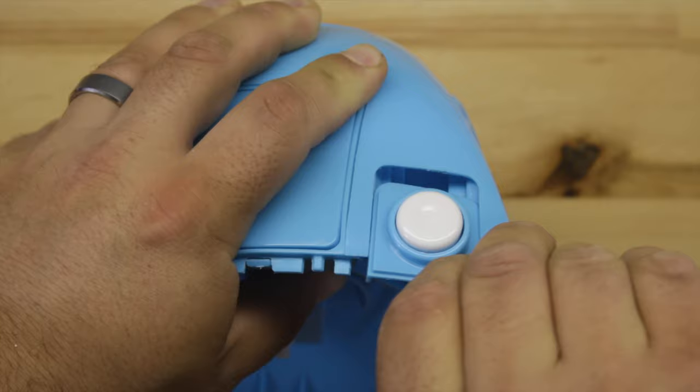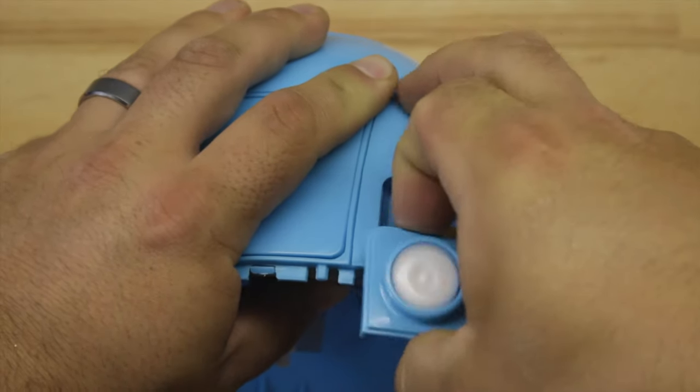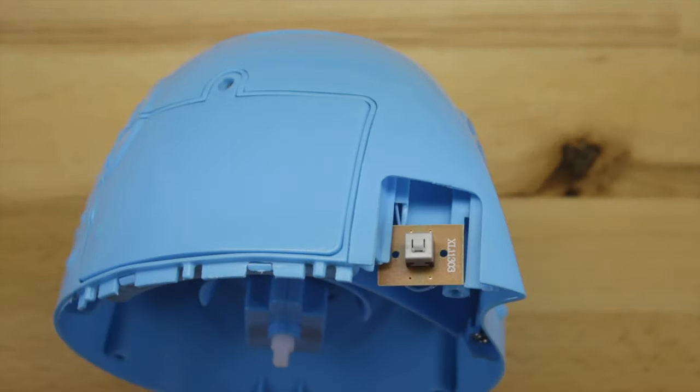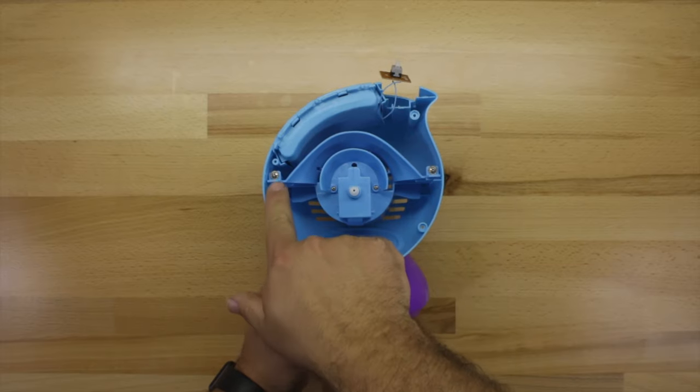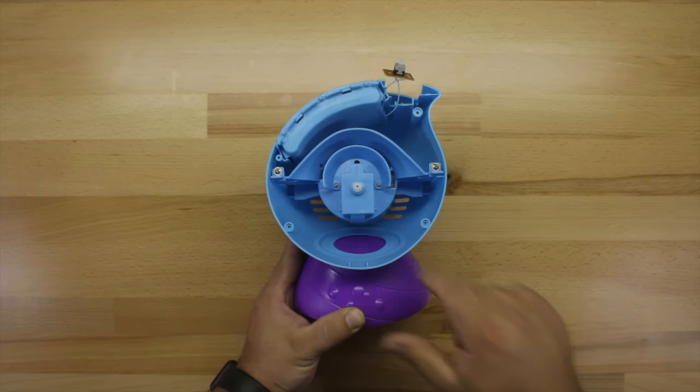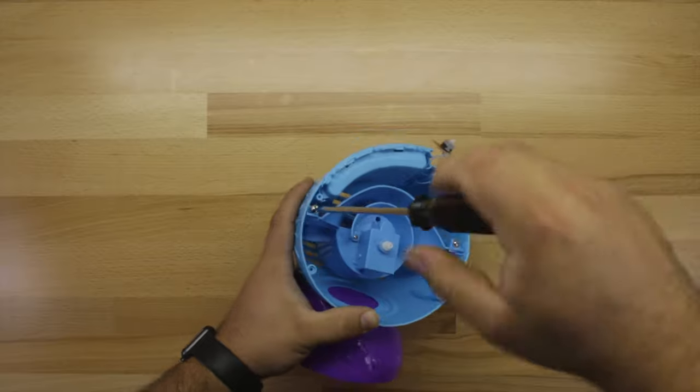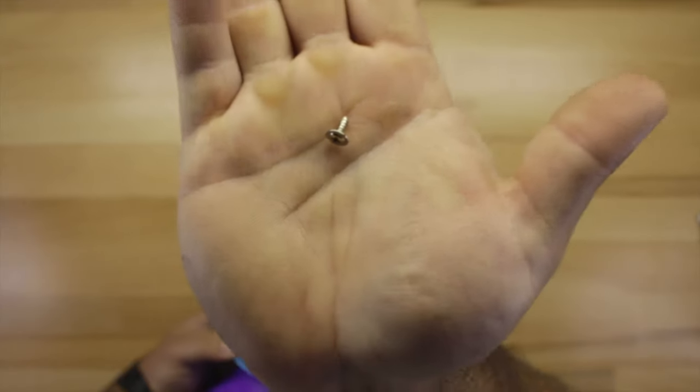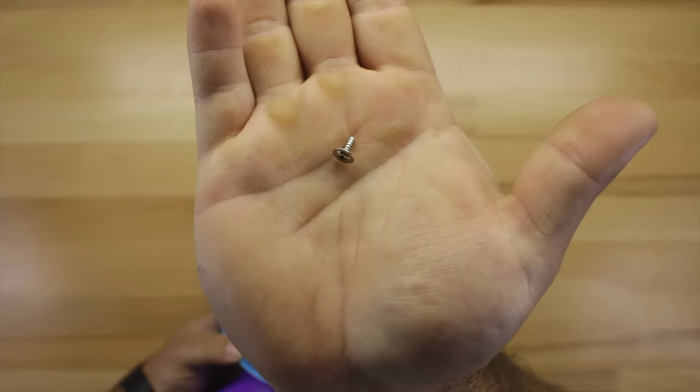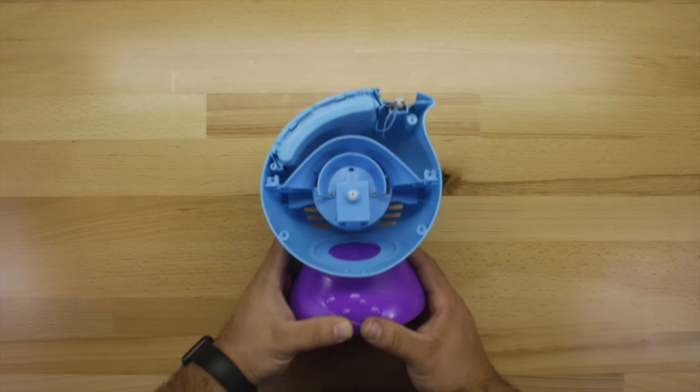We're going to remove the button first and just kind of wiggle it out. There's a couple wires that connect the circuit board there, but it shouldn't be an issue. Then we're going to remove the two screws that hold the fan assembly in place. I just want to point out that these screws are a little different than the other ones we removed, and you want to make sure you keep track of them.